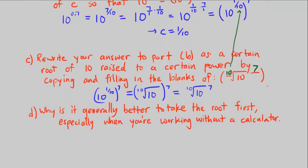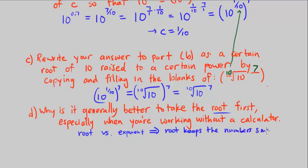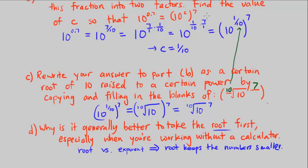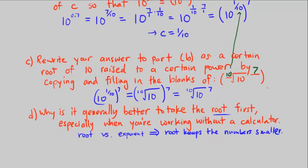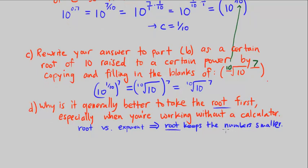Part D asks why it is generally better to take the root first, especially when working without a calculator. They're comparing when we take the root versus the exponent. The reason is that taking the root first keeps the number smaller. If we took 10 to the power of 7 first, we'd get a huge number — that's 10 multiplied 7 times. Doing the root first keeps the numbers we're calculating smaller.